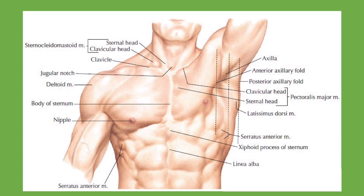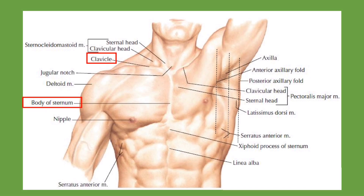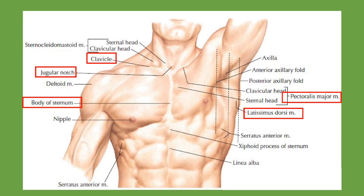Some important landmarks are: first, the clavicle — a long bone which is horizontally placed and is subcutaneous throughout. Second is the body of the sternum. We have the manubrium, whose superior margin is the jugular notch. The latissimus dorsi muscle forms the posterior axillary fold, while the anterior axillary fold is formed by the pectoralis major muscle.